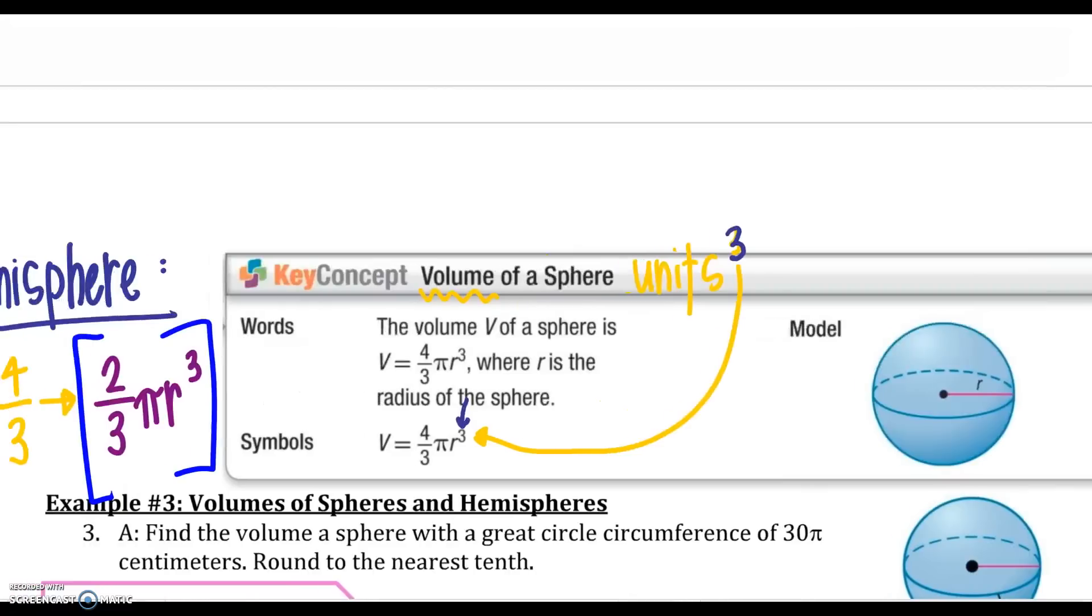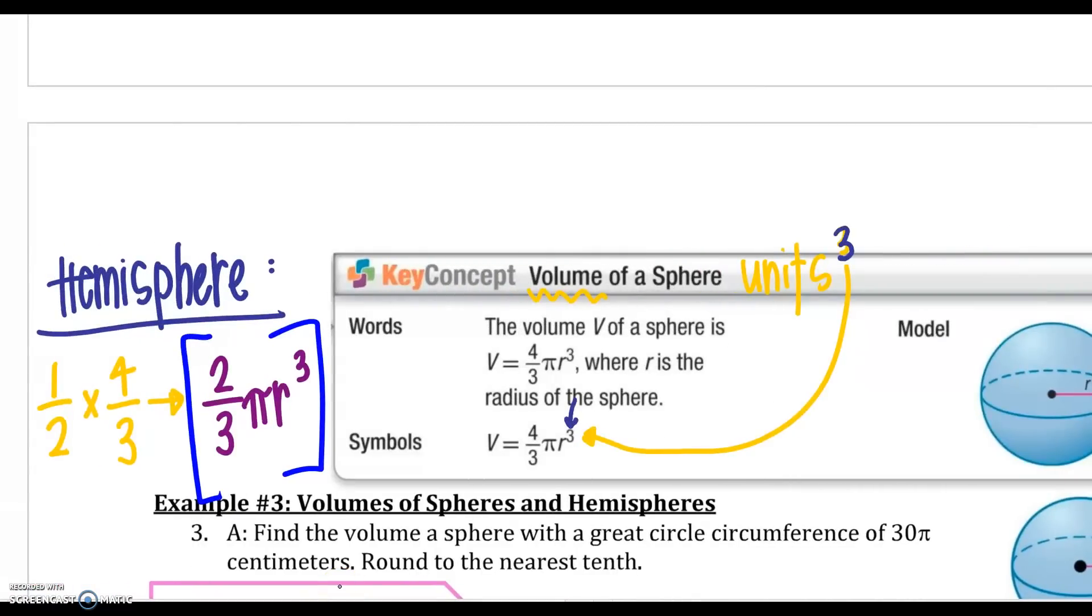And then for a hemisphere, it is half of a sphere. So I'm going to take one half of the 4/3, which gives me the 2/3πr³. So that is how you get your formula, which is 2/3πr³.